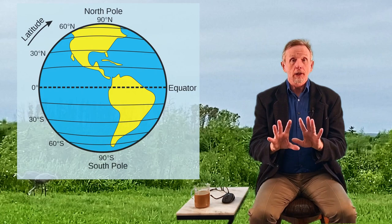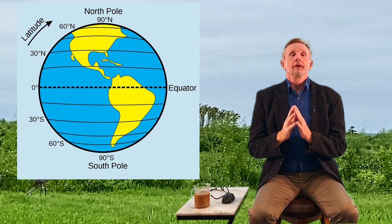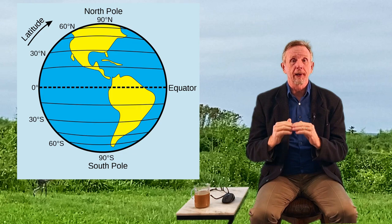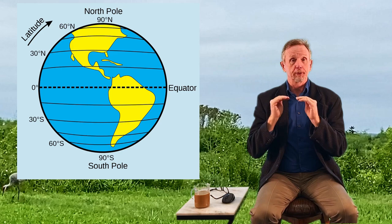Latitude lines go around the globe — big at the equator and getting smaller and smaller until the tippy top. The equator is zero. The most northerly point is the North Pole at 90 degrees, and the most southerly is the South Pole at 90 degrees — so between zero and 90 north, and zero and 90 south. Latitude strongly affects climate because the amount of solar energy an area receives depends on it.